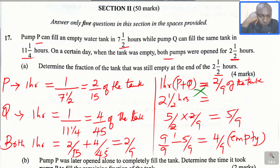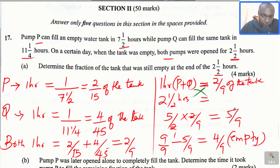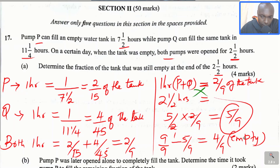To summarize Part A: we started by getting the fraction filled by P in 1 hour, which is 2 over 15; Q in 1 hour is 4 over 45. Together in 1 hour they fill 2 over 9 of the tank. Since they were opened for 2 and a half hours, they filled 5 over 9. The remaining empty fraction: taking the full tank as 9 over 9, subtract 5 over 9, giving 4 over 9.